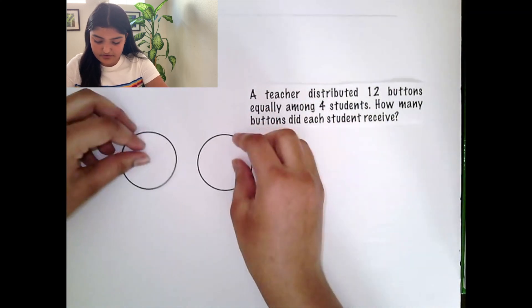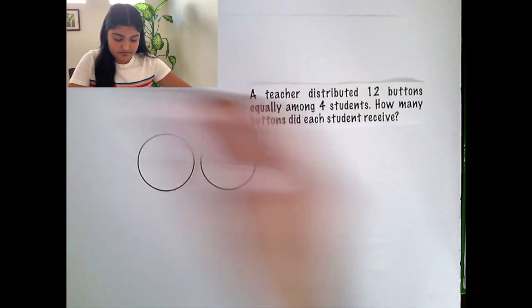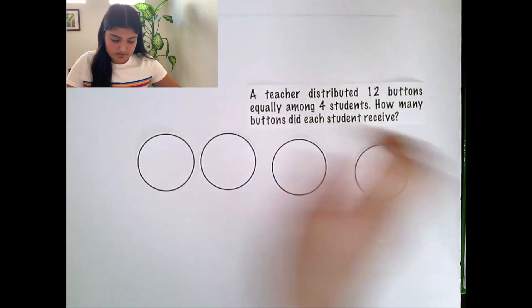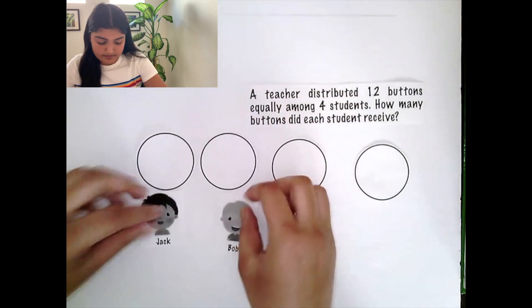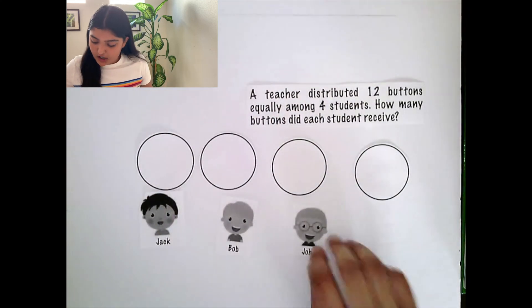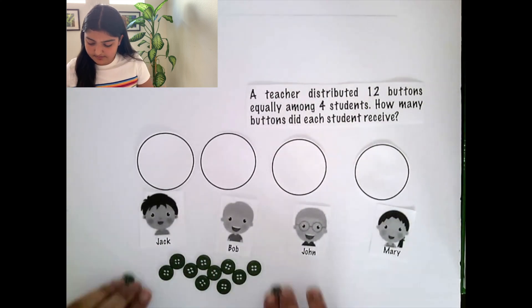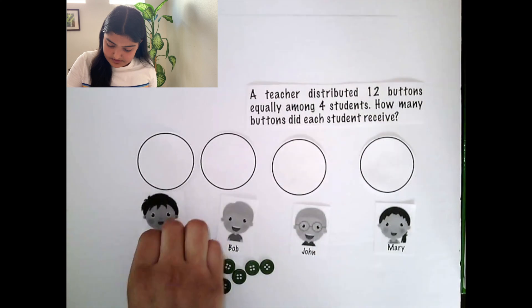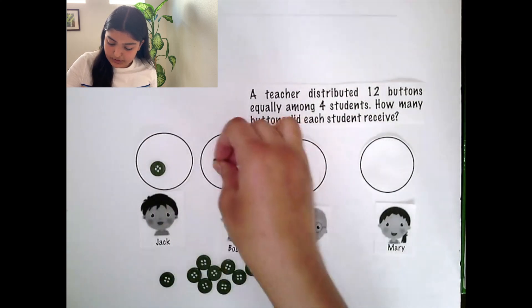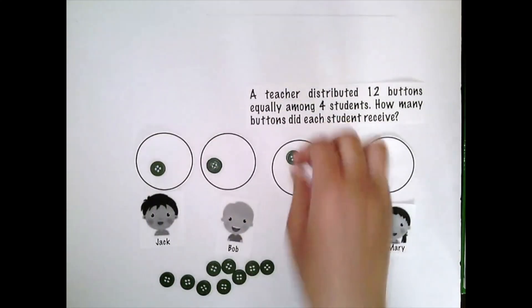So here we have 4 students. We have Jack, Bob, John, and Mary. And here we have 12 green buttons. The teacher can equally distribute these 12 buttons among her students.